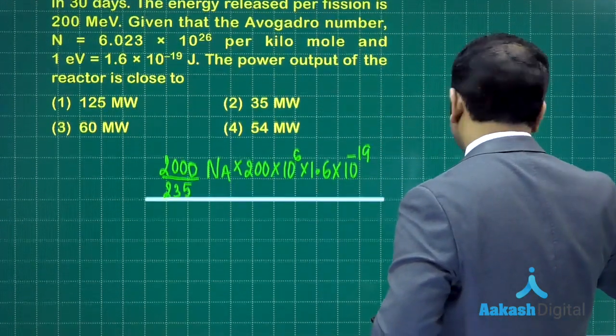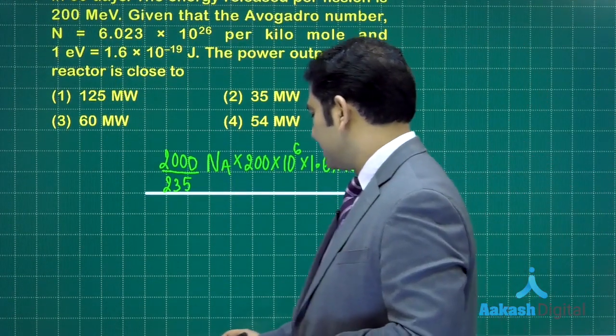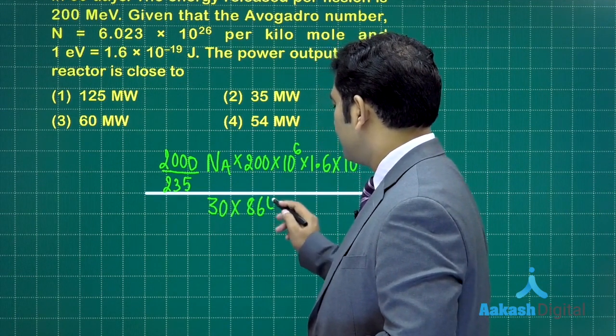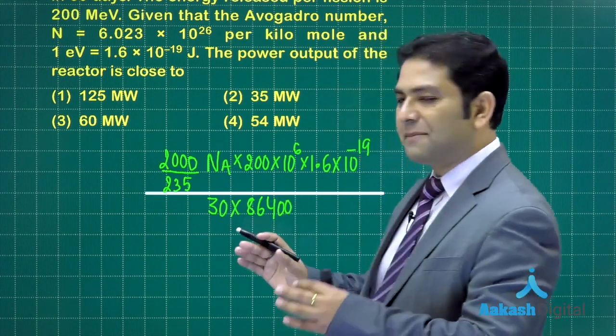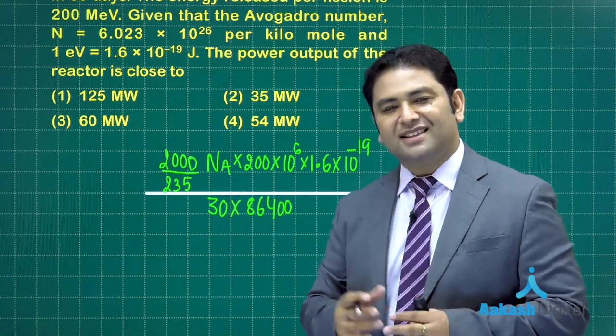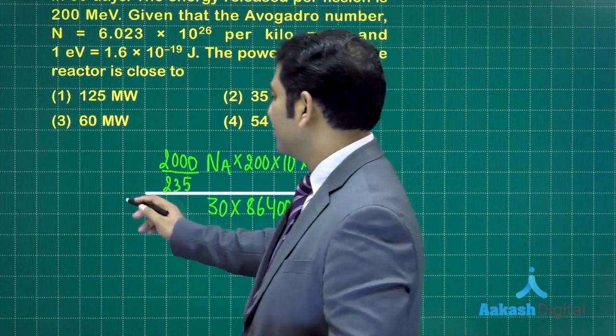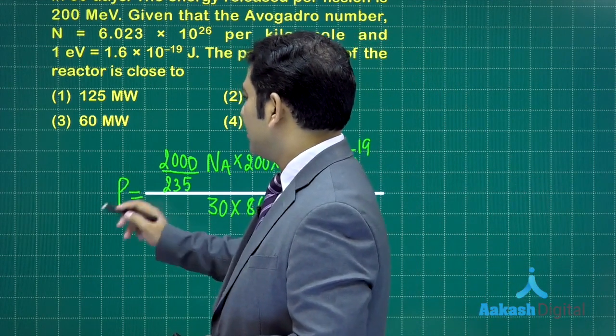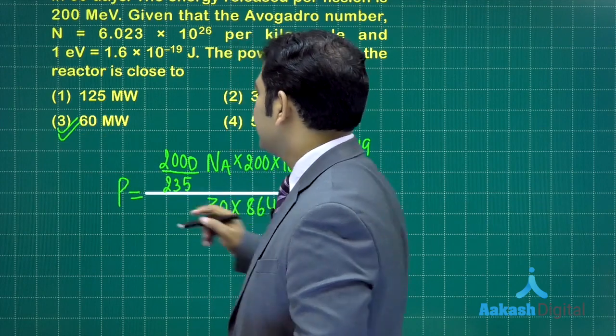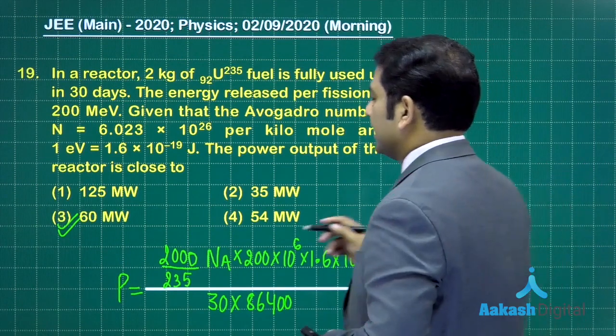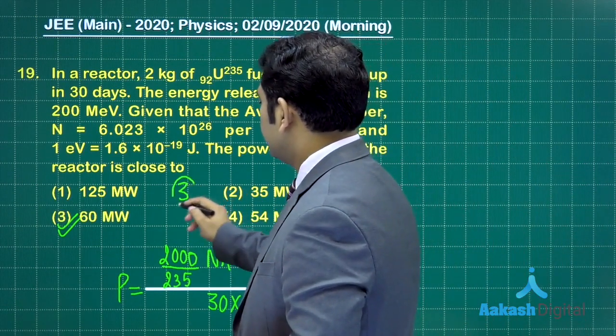Now you need to divide it by the time. The time is 30 days. Let's convert 30 days into seconds: 30 days, and 1 day has 86,400 seconds. You can multiply 24 into 3600. The value will come very close to 60 megawatts. For question number 19, the correct option is option number 3.